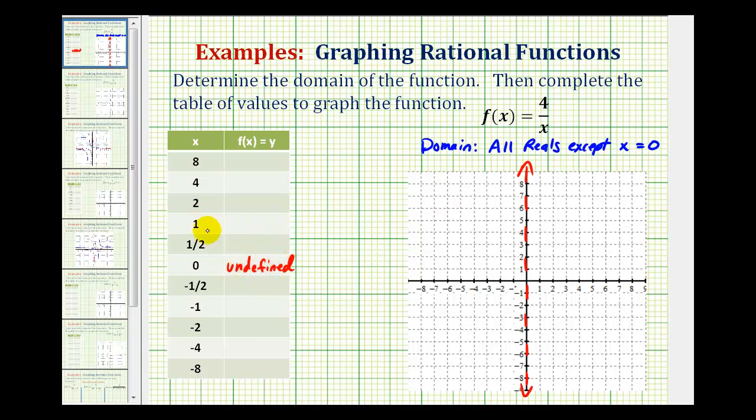Now we're going to select x values that are greater than 0 and less than 0. And it is always helpful to pick at least two values that are pretty close to 0. For example, here we selected x equals 1 half and then increasing values of x, and then here we selected x equals negative 1 half and decreasing values of x. Since we do have 4 divided by x, it is convenient to pick values of x that can divide evenly into 4.